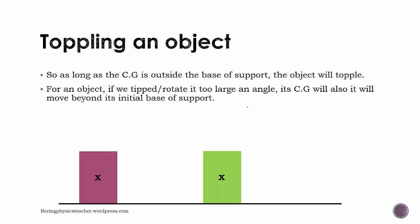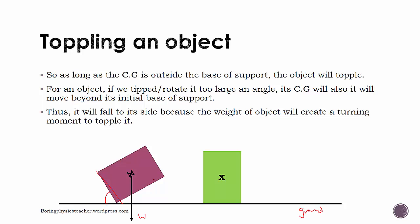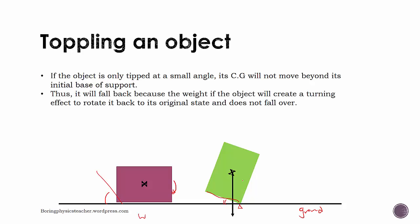If an object is tipped or rotated by too large an angle, the center of gravity moves beyond its base of support and it topples over. However, if the object is only tipped at a small angle, the center of gravity does not move beyond the base of support. The weight still remains in line with the base, so the object falls back to its original position and does not topple.